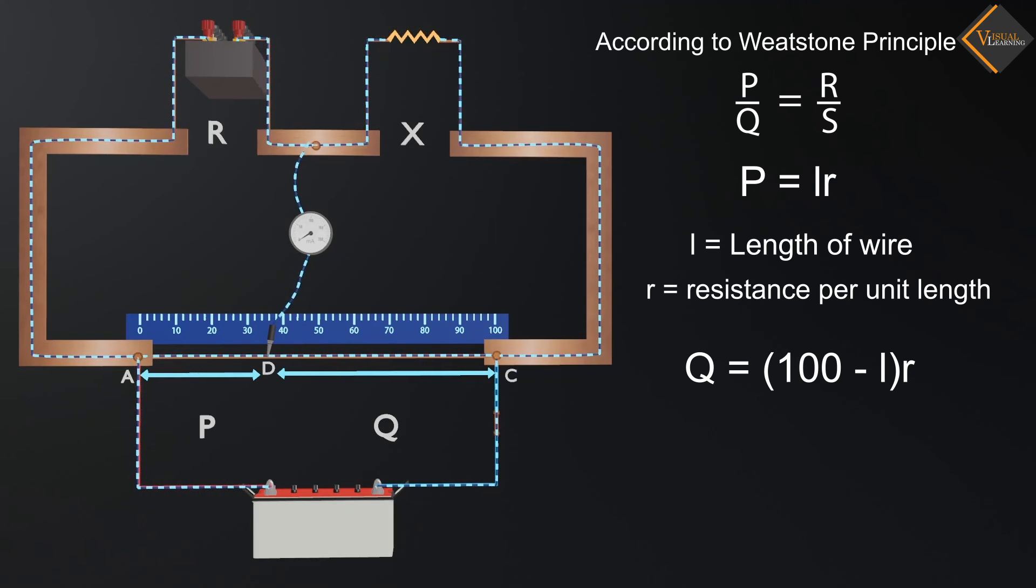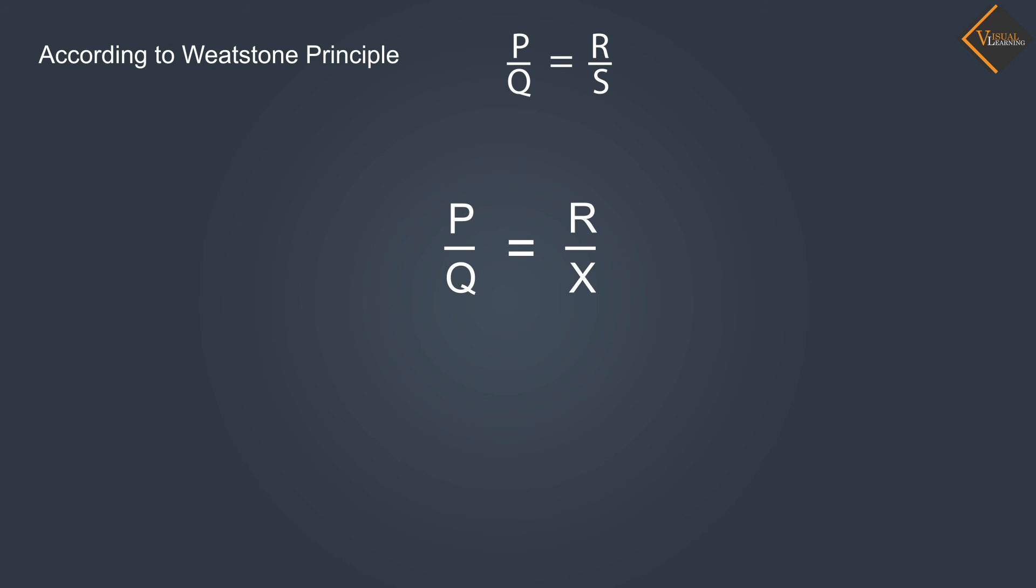Now, as we are obtaining the desired resistance from the resistance box, whose value we already know, to calculate the unknown resistance X, we will use the Wheatstone bridge principle with the resistance values of P, Q, and R. By putting the values of these three resistances into the formula, we can easily calculate the unknown resistance.